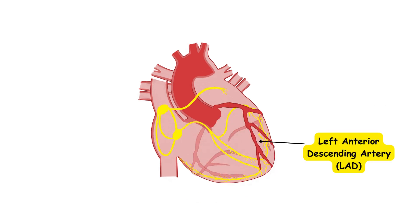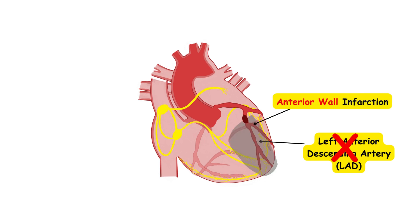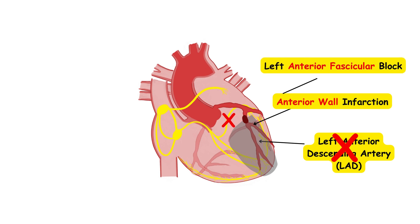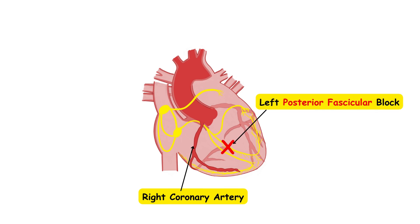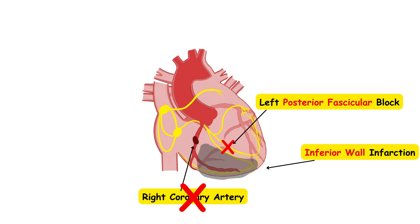An occlusion of the anterior descending artery will produce anterior wall infarction, eventually associated with left anterior fascicular hemiblock and perhaps with right bundle branch block depending on the location of the occlusion, giving an anterior wall infarction with bifascicular block. Left posterior fascicular hemiblock occurs with occlusion of the right coronary artery, so we expect posterior hemiblock with an inferior myocardial infarction pattern on the ECG.